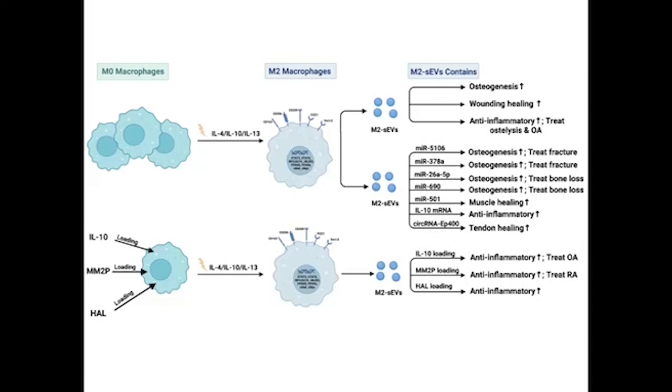Extracellular vesicles produced by M2 macrophages can promote bone differentiation. At the same time, extracellular vesicles can be loaded with a variety of anti-inflammatory factors, playing an important role in the treatment of osteoarthritis and other inflammatory bone diseases.